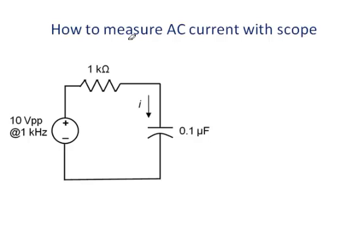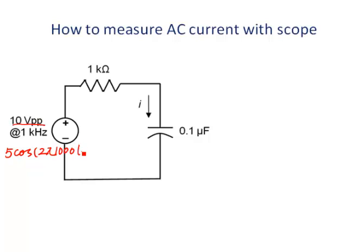In this tutorial, I will talk about how to measure AC current with an oscilloscope. Let's look at this simple circuit. The power supply generates 10 volts peak-to-peak at 1 kHz frequency. The voltage is a sinusoidal voltage. If we want to write it as a cosine function, the peak-to-peak value is 10, so the peak value should be 10 divided by 2, that is 5. So: 5 cos(2π × 1000t + 0°).